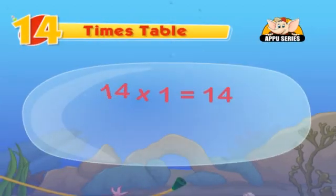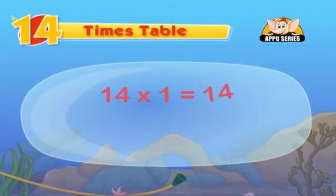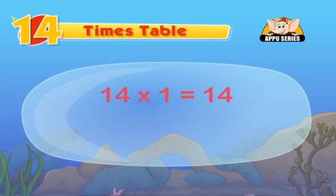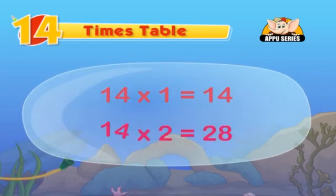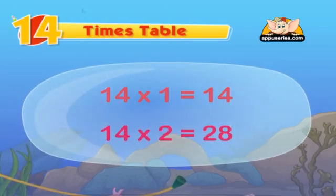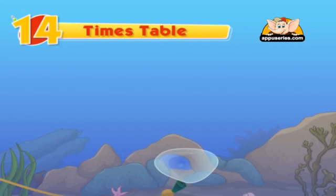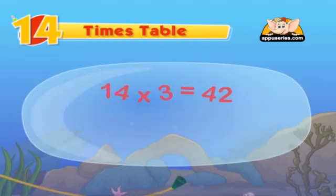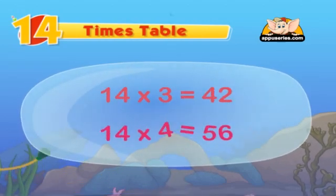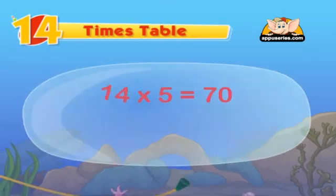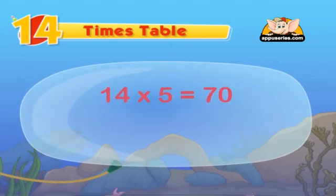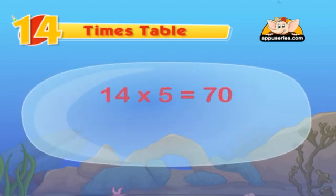14 ones are 14, 14 twos are 28, 14 threes are 42, 14 fours are 56, 14 fives are 70. Isn't it so easy?